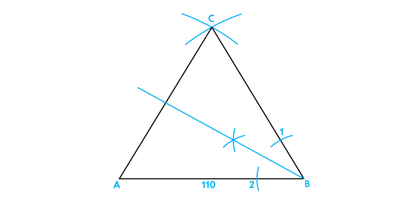Now repeat this process from angle A. Place your compass on point A, adjust it slightly and draw arcs to cut through AB and AC. Label the intersections as point 3 and 4.